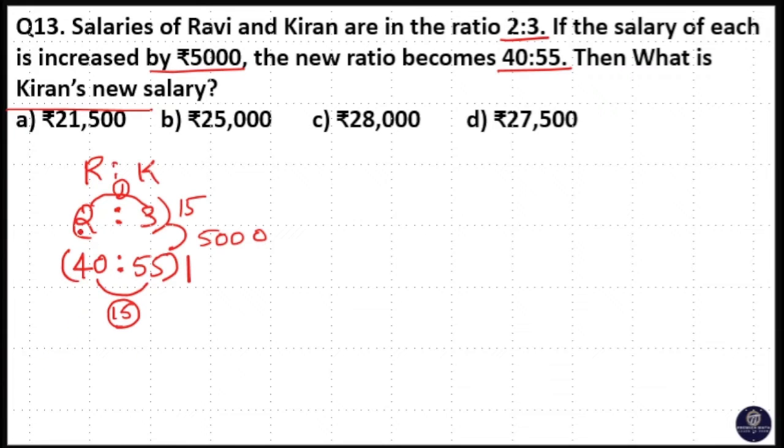That means 2 into 15 is equal to 30. 3 into 15 is equal to 45. 40 into 1 is equal to 40. 55 into 1 is equal to 55. Now you know the difference is equal to 10 unit. 45 and 55, 10 unit. 30 and 40, 10 unit. So that is same.